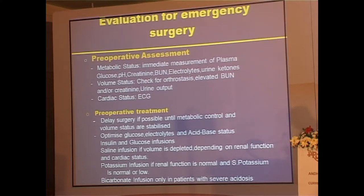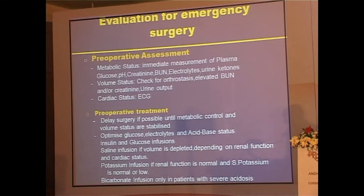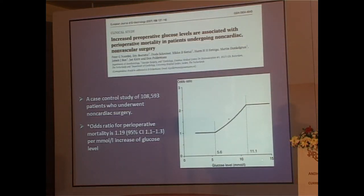For emergency surgery, assess metabolic status — glucose, pH, creatinine, ketones — plus volume status via orthostasis, urinary output, and ECG. Delay surgery if possible when metabolic control or volume status is unstable. Optimize glucose, electrolytes, and acid-base status with insulin-glucose infusions, saline if volume-depleted, potassium infusion if renal function and potassium are normal or low, and bicarbonate only in severe acidosis. Outcomes in emergency non-cardiac, non-vascular surgery are poor, with an odds ratio for perioperative mortality of 1.19.